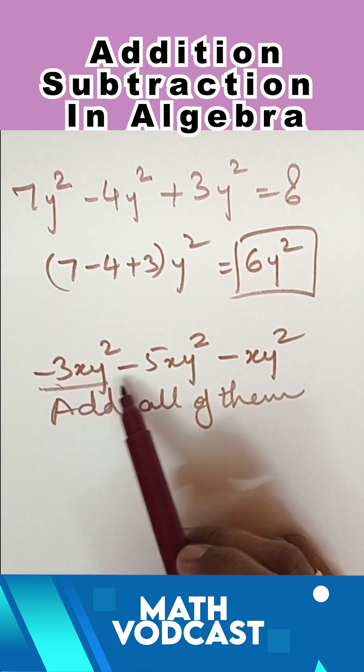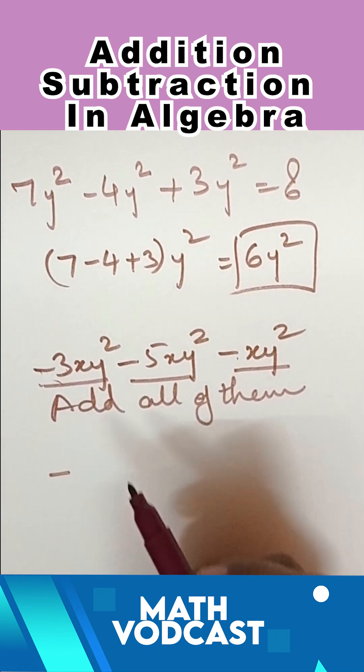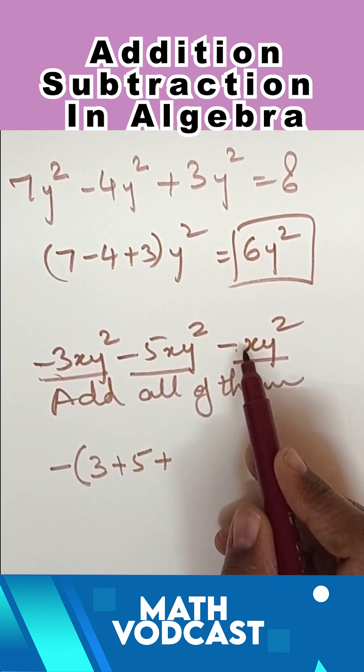All of these are negative numbers. Since the minus sign is everywhere, I will write minus (3 plus 5 plus 1).